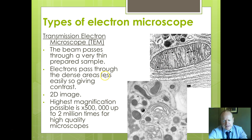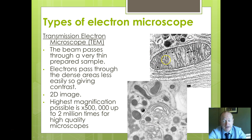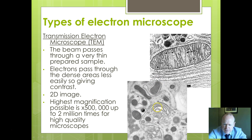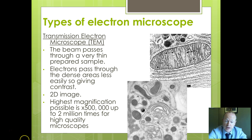The TEM produces a 2D image. Highest magnification is 500,000 times, up to 2 million times for the best quality ones. Here are some examples of transmission electron micrographs. This shows a mitochondria with ribosomes attached around the outside — the ribosomes are about 2 nanometres in size, which you would not be able to see with a light microscope. Other examples show mitochondria and what is probably a Golgi body or endoplasmic reticulum, along with various other organelles.